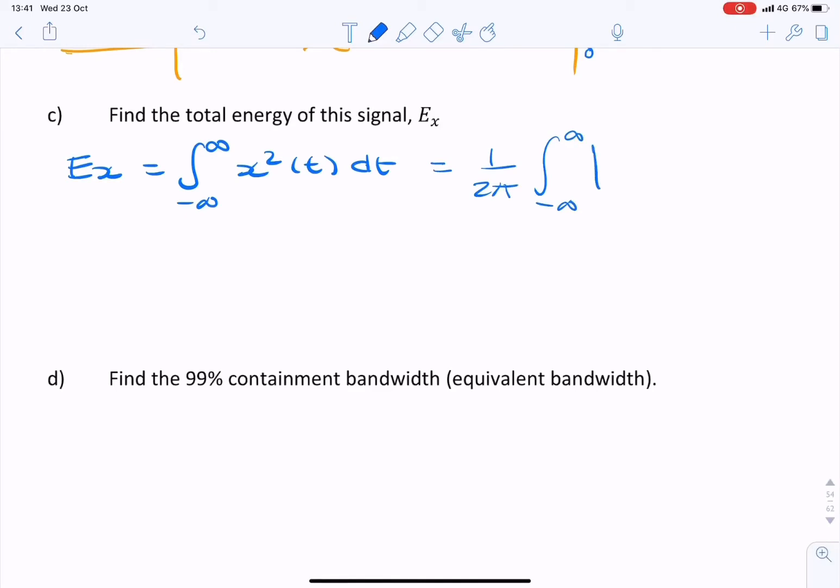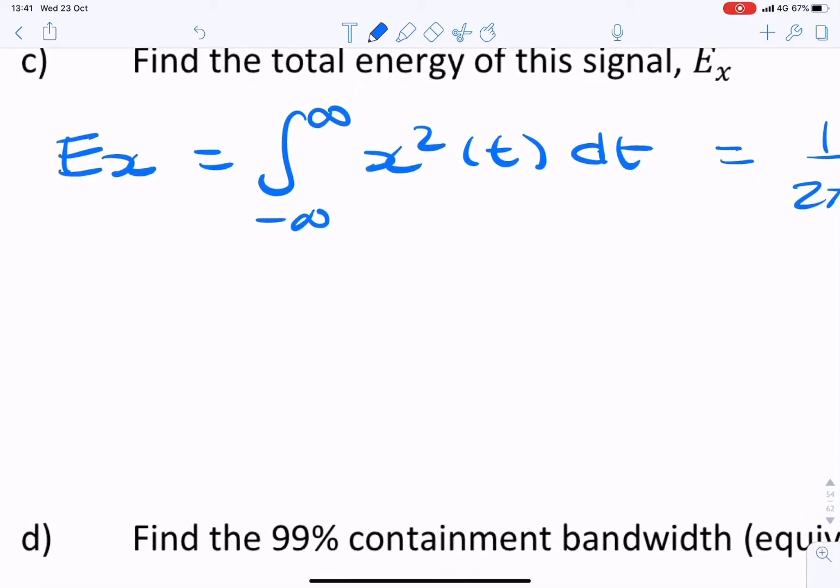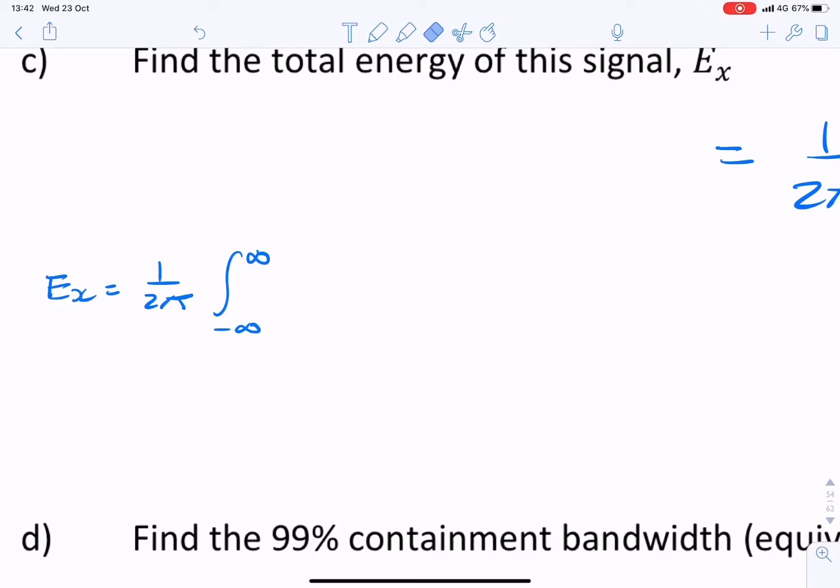So it's the magnitude of x(ω) squared dω. So we simply replace that with our function. So Ex equals 1 over 2π, the integral from minus infinity to infinity, π over a, e to the minus a ω squared dω. So this is where we start.